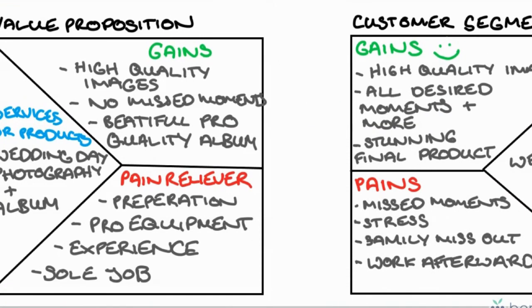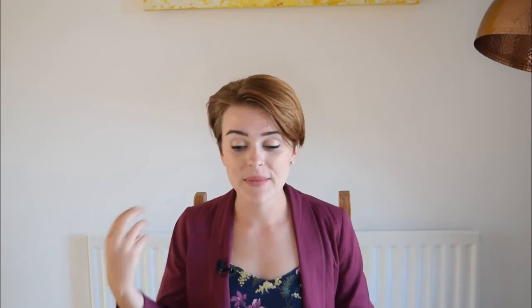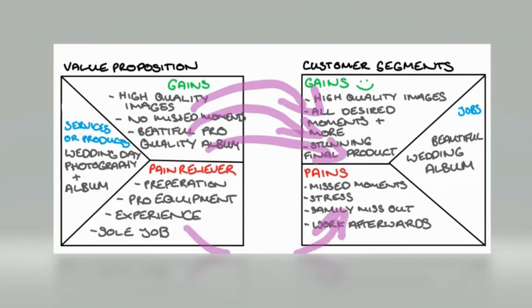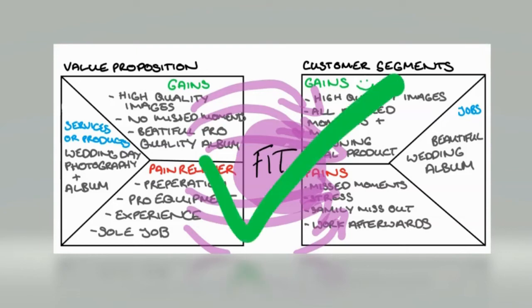Now when we look at these two things together — my value map and my customer profile — they fit really well. They're worried about missing moments: I won't miss moments because I'm prepared. They're worried about stress: they don't need to worry because that's my job. They're worried about family missing out: family won't miss out because I'm providing the service. They're worried about all the work afterwards compiling photos into an album: they don't have to worry about that at all — I'll do all of that for them and provide a stunning album that hopefully far exceeds their expectations.